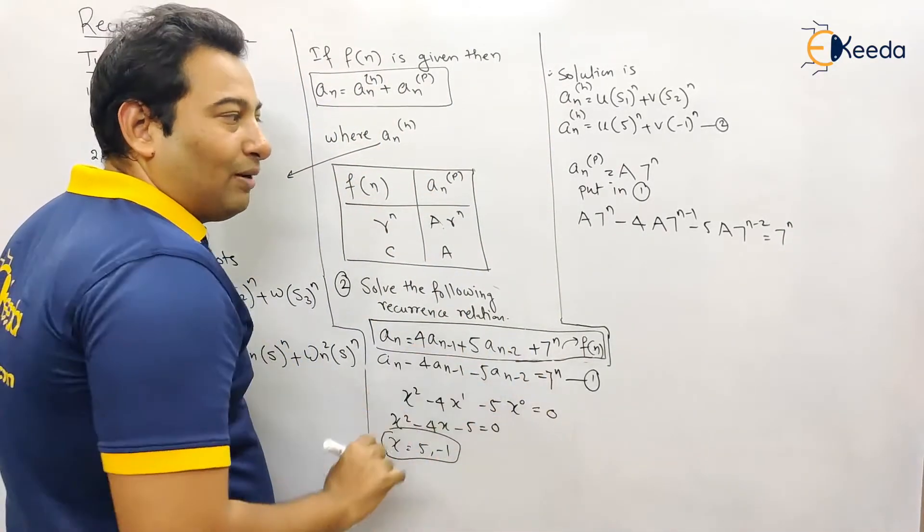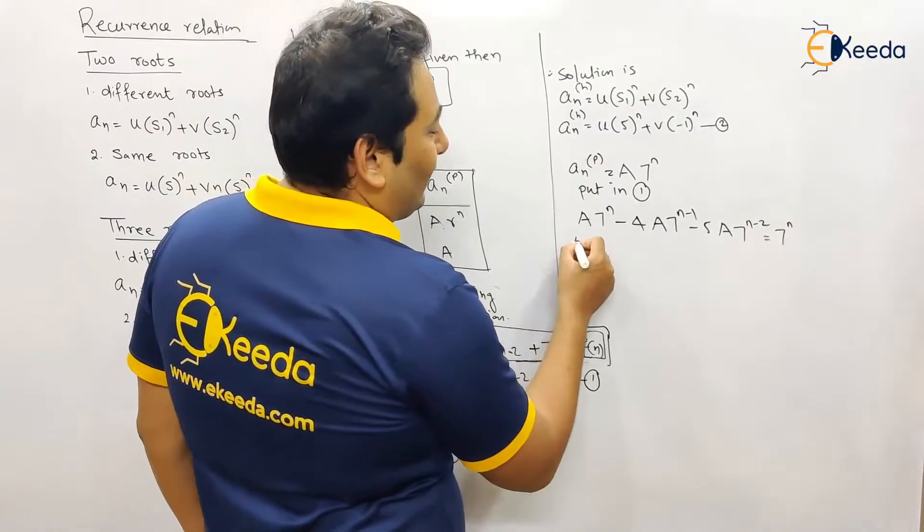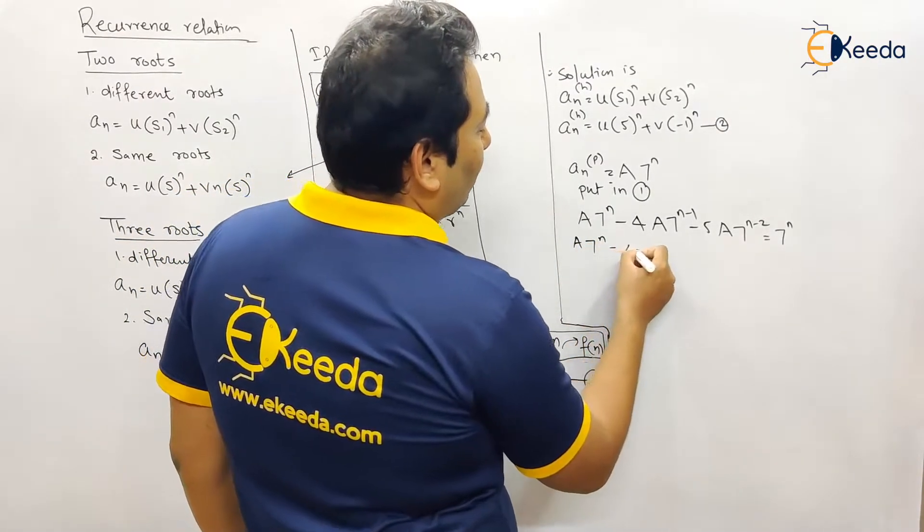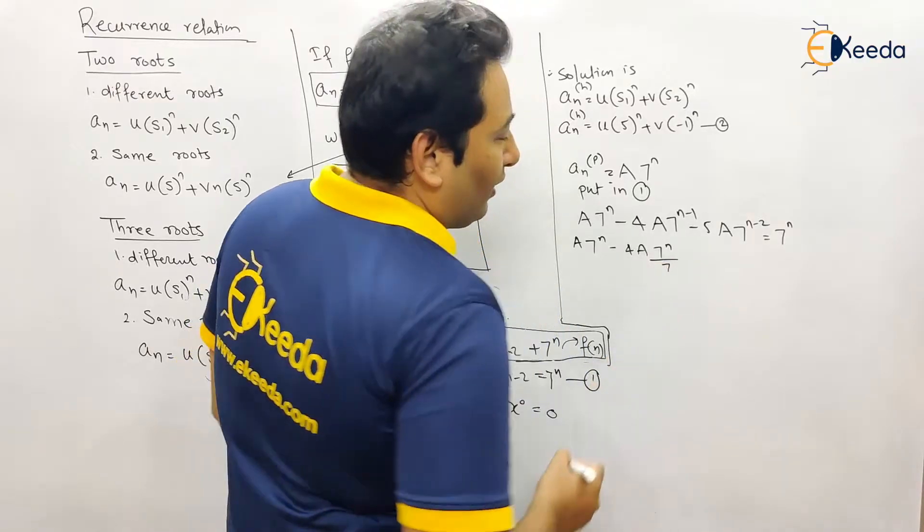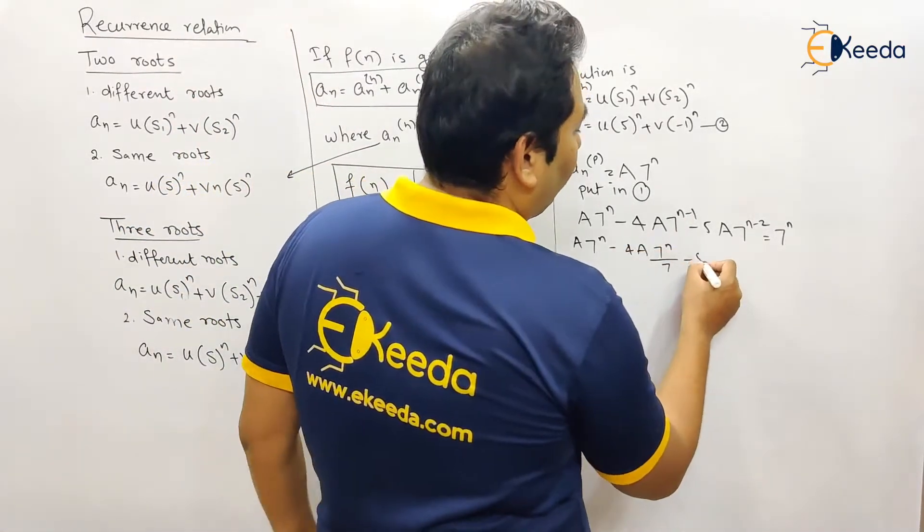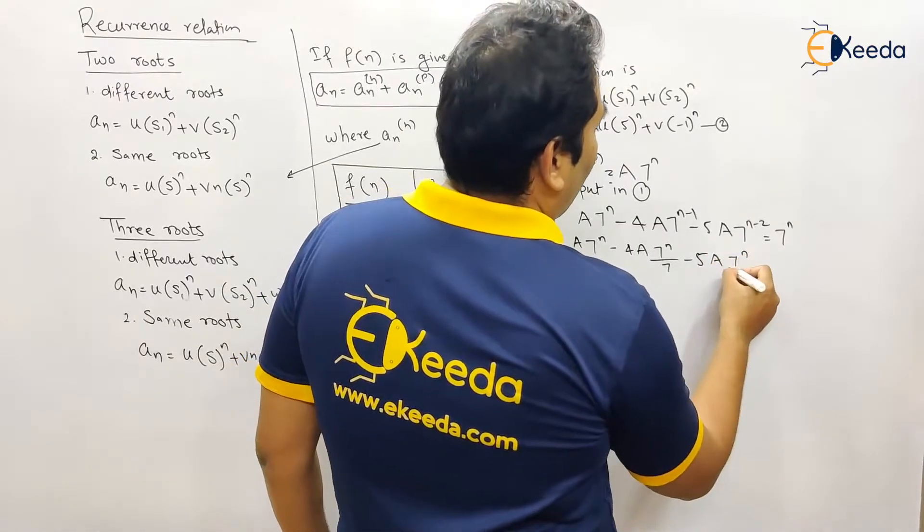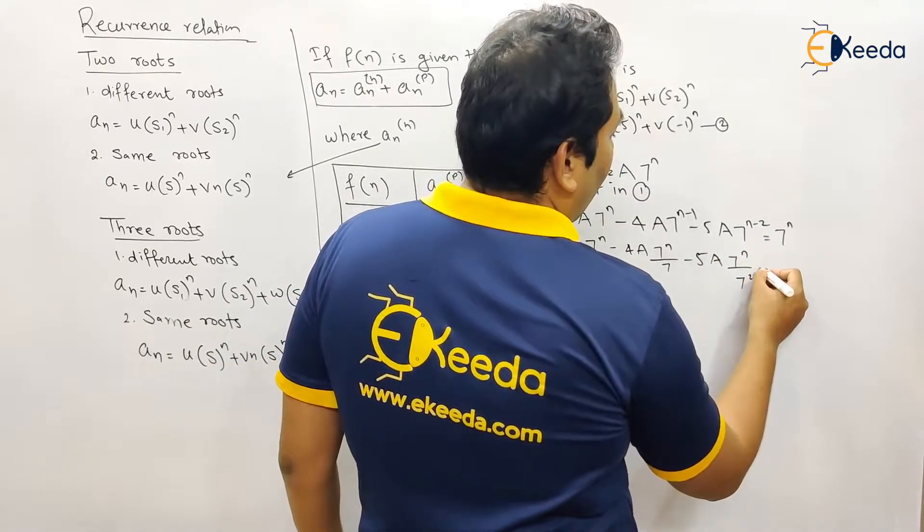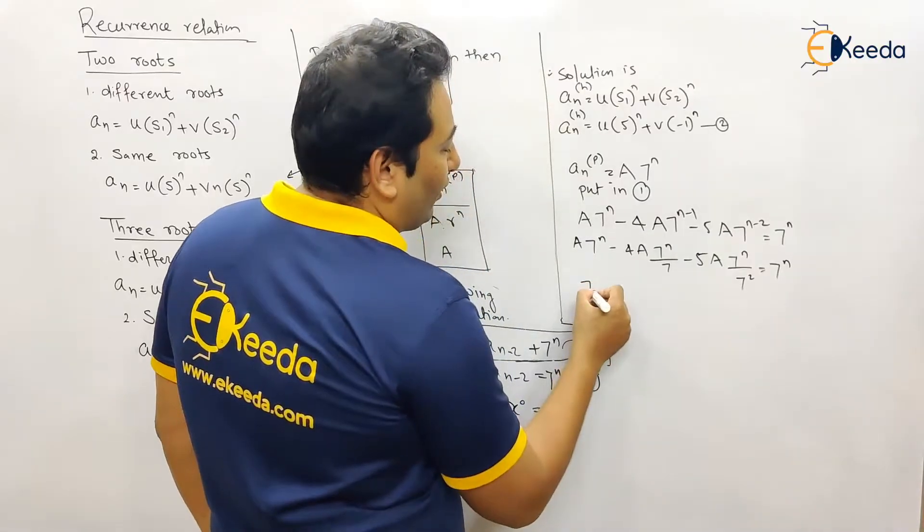We are going to put in equation number one. So this is a·seven raised to n minus four·a·seven raised to n upon seven. Obviously seven raised to n minus one can be written in this format: seven raised to n upon seven square.